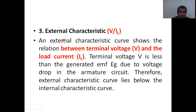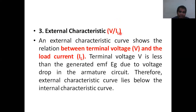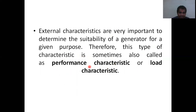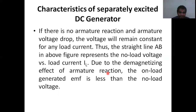The open circuit characteristics are almost the same for all machines. The most important characteristic is the external characteristics, because based on this only we select the generator — whether DC shunt, DC series, compound, self-excited, or separately excited. The external characteristics is drawn between terminal voltage and load current under loaded conditions, and it is also called performance characteristics or load characteristics.